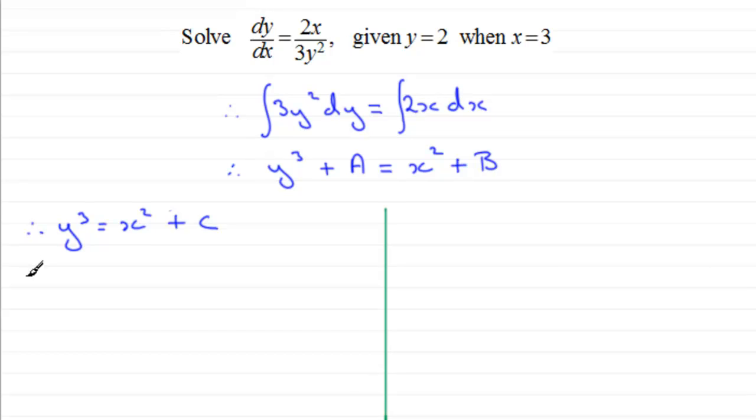And then we have to work out what that value of C is. And we use our boundary conditions here. We know that when y equals two, we're told that x equals three. And we would substitute those values into our equation. And if we did that, we'd have two cubed, which is eight,